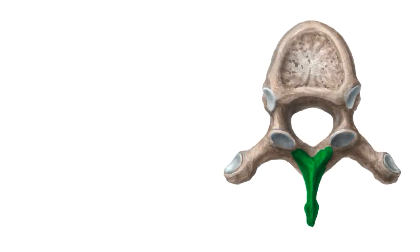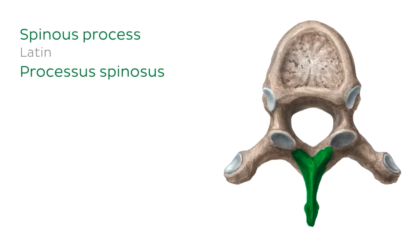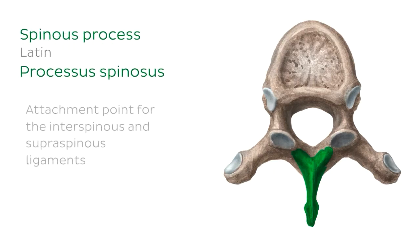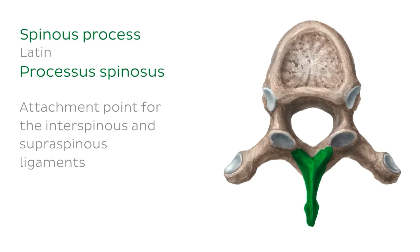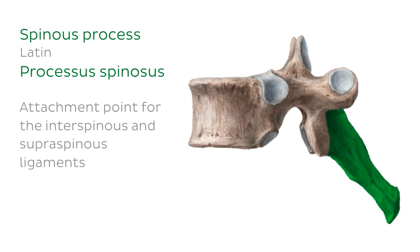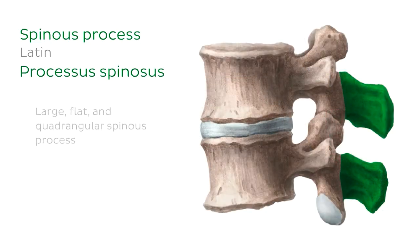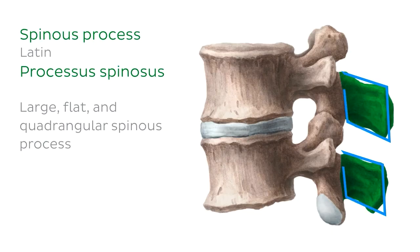The first process we're going to talk about is the spinous process. It serves as an attachment point for the interspinous and supraspinous ligaments, which we'll talk about later. On our thoracic vertebra, the spinous process is long and slender, angled sharply downwards, which serves as protection for the spinal cord. Whereas the lumbar vertebra has a large, flat and quadrangular spinous process.